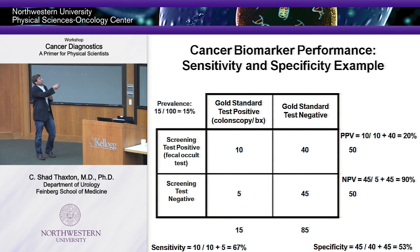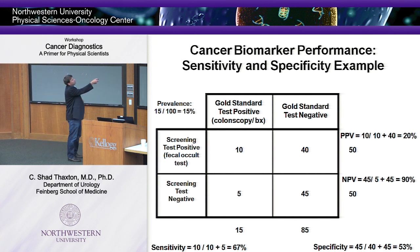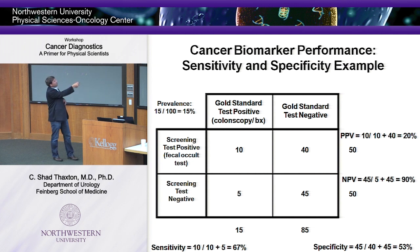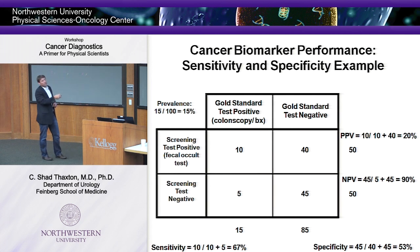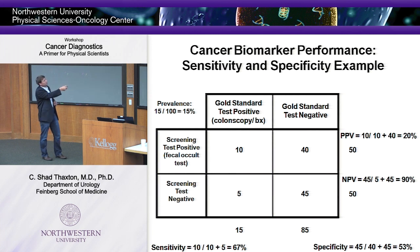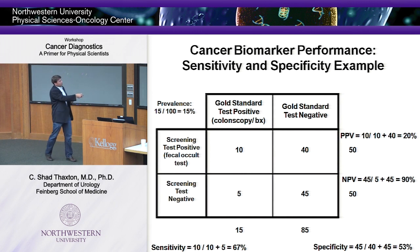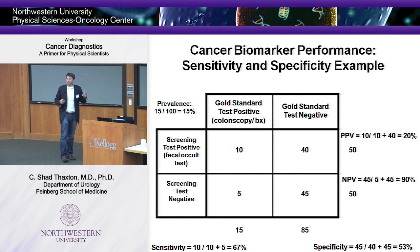If our screening test shows 10 people positive but 5 negative who we know have the disease, the sensitivity is 10 over 10 plus 5, or 67%. The specificity — when the test comes out negative and the patients truly don't have the disease — is 45 over 53, which is about 53%. But what clinicians really need to know are the positive and negative predictive values: if a test comes out positive, what is the likelihood the patient actually has the disease? With fecal blood testing, if 10 patients test positive but 40 don't have the disease, the positive predictive value is about 20%.